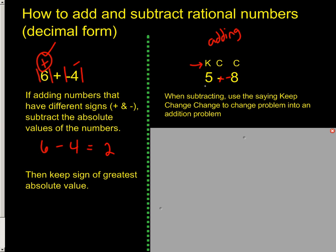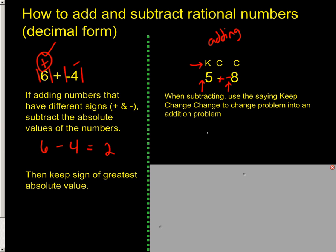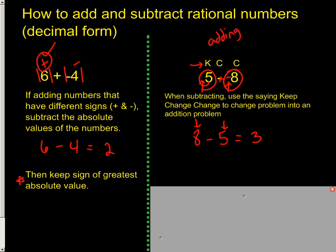But now we have to check the signs. This is a positive, this is a negative. When there are mixed signs like that and we're adding, we're actually going to take the absolute value. So what's the absolute value of negative 8? It's 8. Absolute value of positive 5 is 5. Always put the biggest absolute value first and then subtract the smaller one. 8 minus 5 is 3. And then make sure you do the check again for which absolute value was greater. It was negative 8, so that means my answer will be negative.